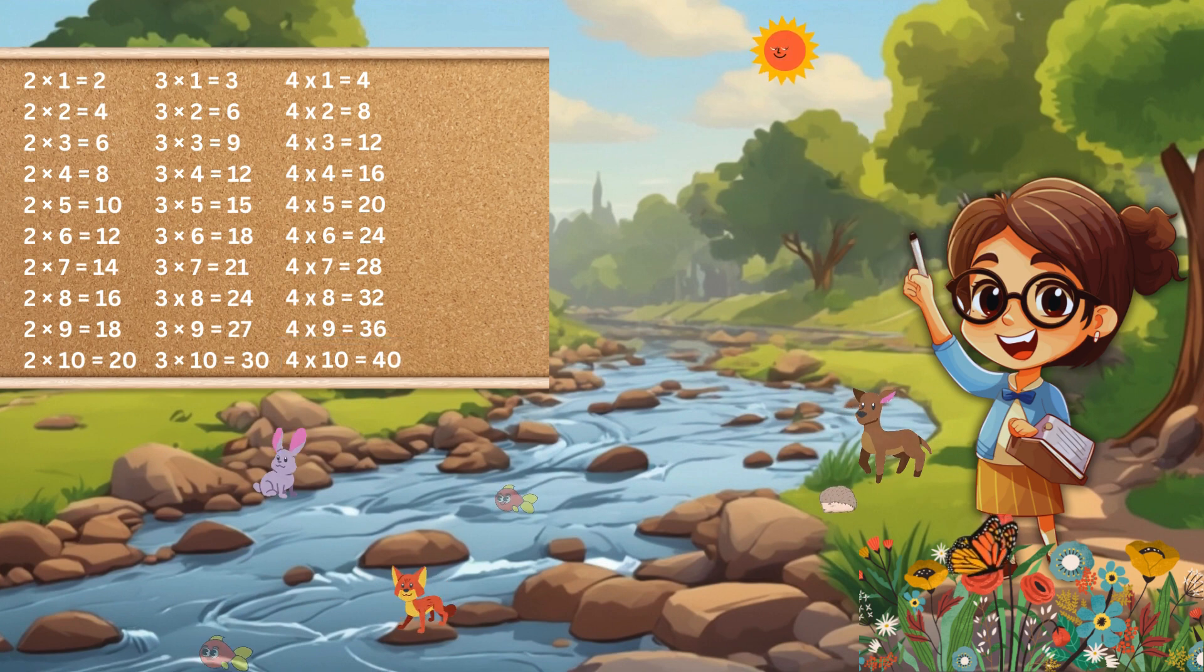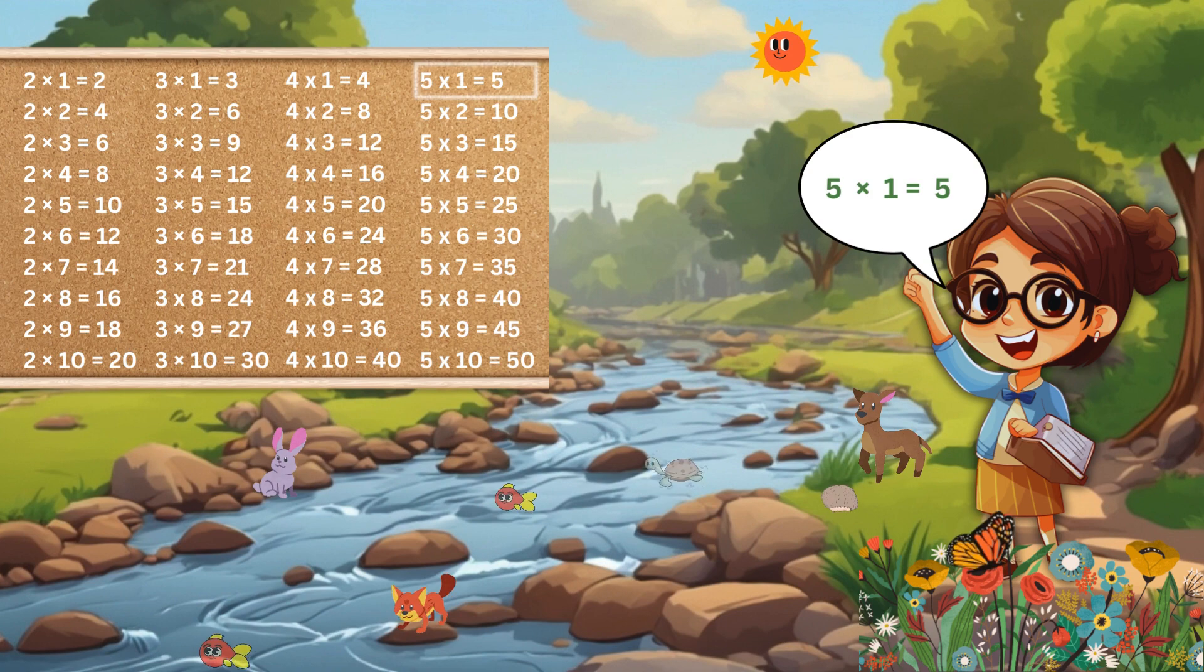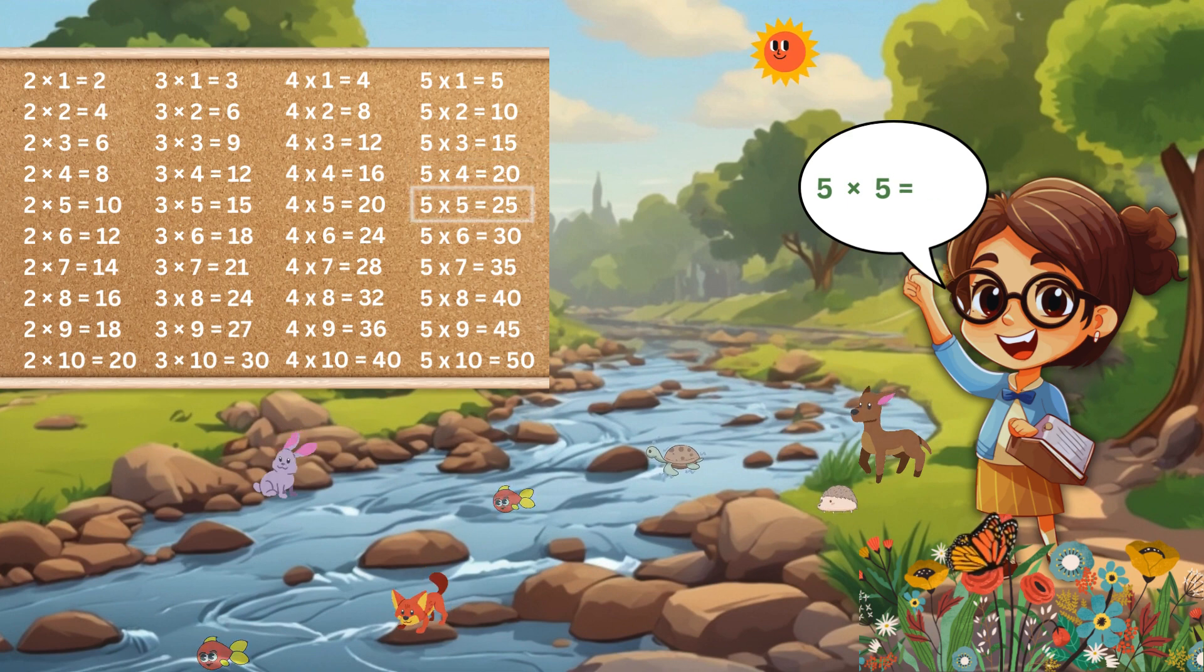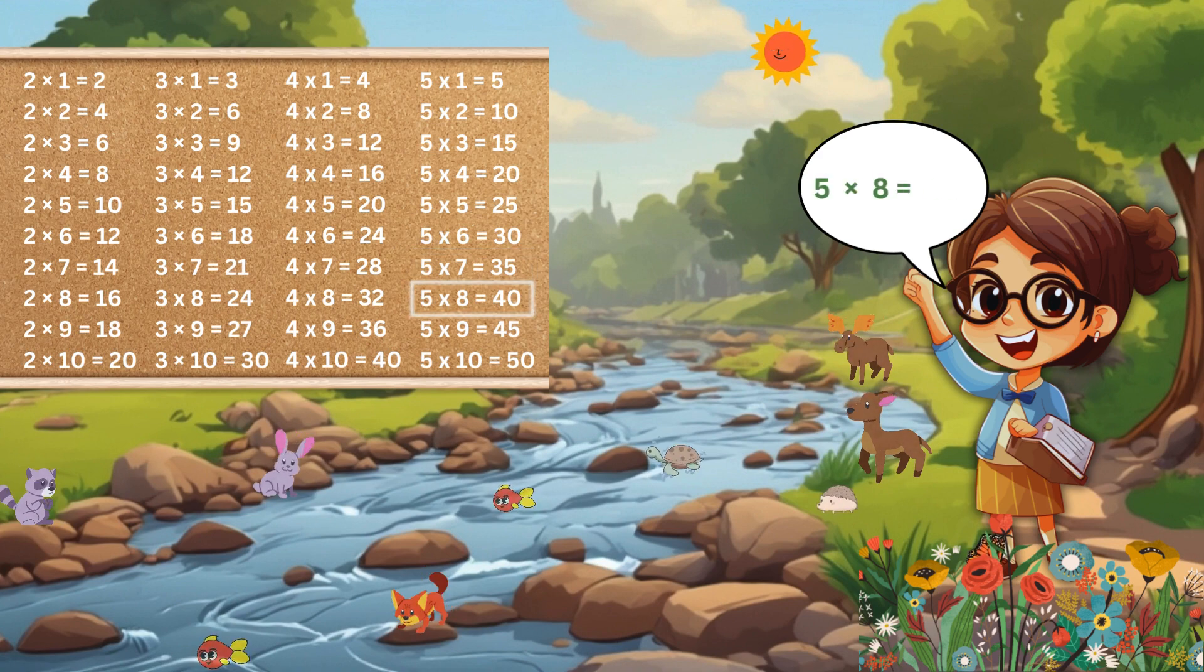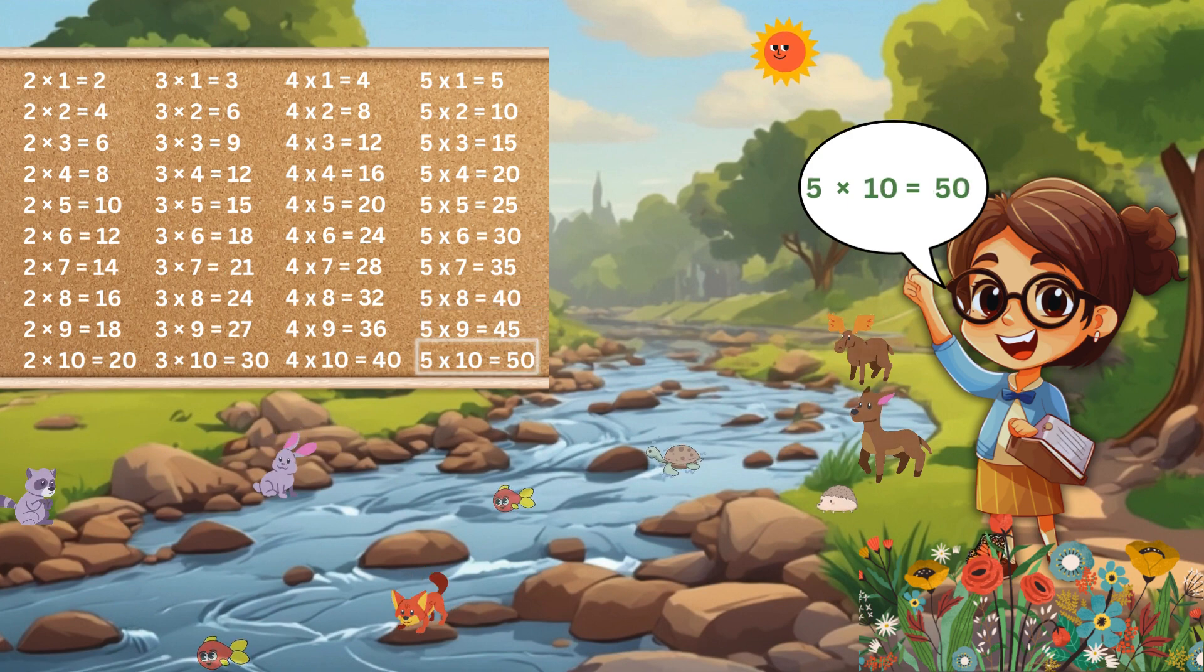Now let's learn table of 5. 5 1s are 5, 5 2s are 10, 5 3s are 15, 5 4s are 20, 5 5s are 25, 5 6s are 30, 5 7s are 35, 5 8s are 40, 5 9s are 45, 5 10s are 50.